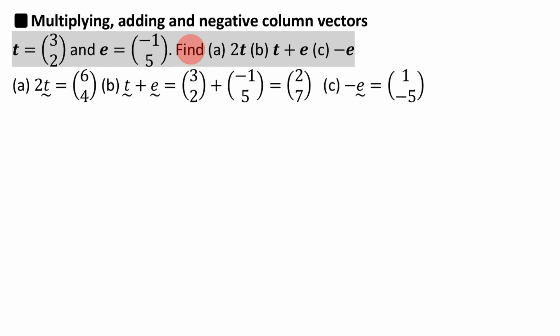Anyway, let's move on to the next thing, where we're going to add vectors. So we're adding this vector and that vector, t and e, add it together. Pretty easy, just add the numbers. So 3 plus minus 1 is 2, 2 plus 5 is 7, job done.